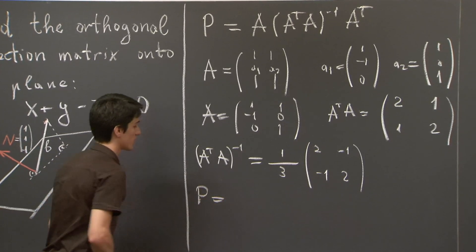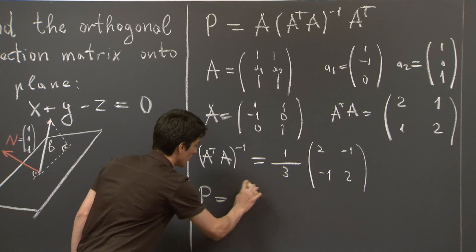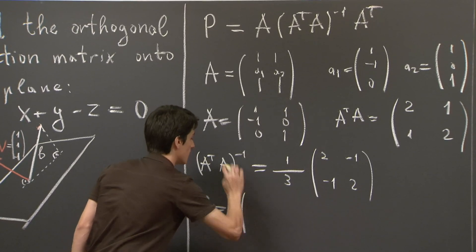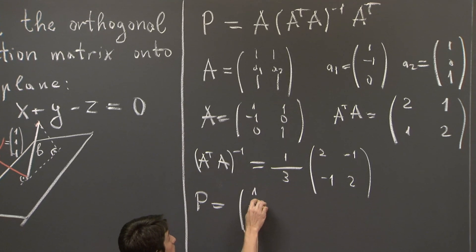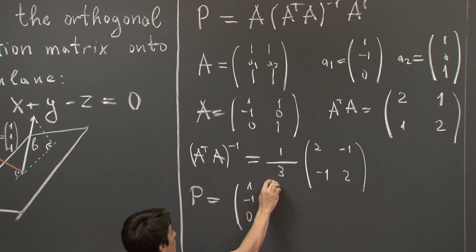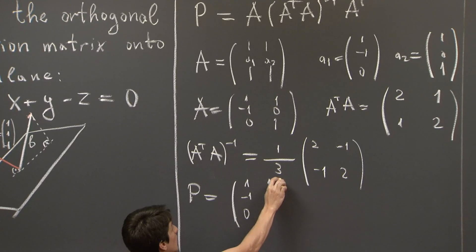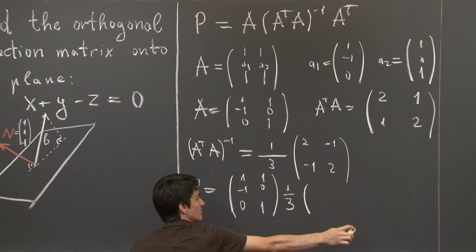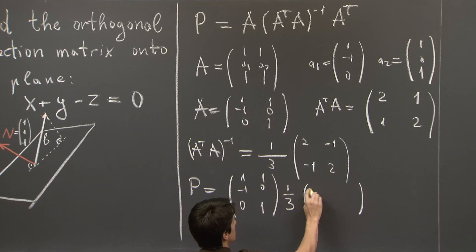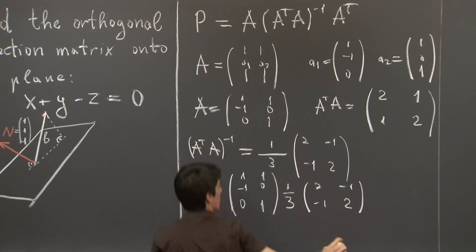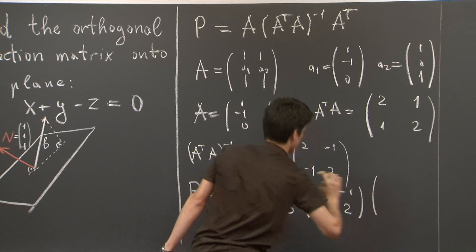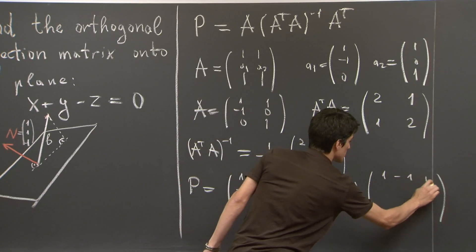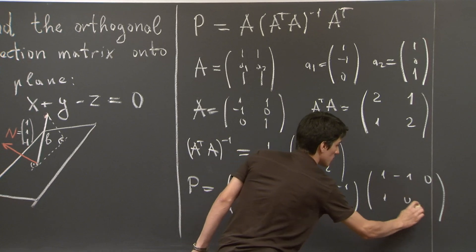And therefore, the projection matrix is given by the following product of matrices. So this is 1/3, 2, negative 1, negative 1, 2. And then transpose of A, which is 1, negative 1, 0, 1, 0, 1.